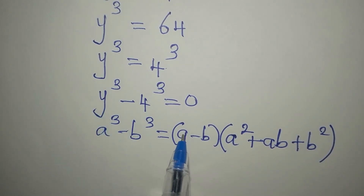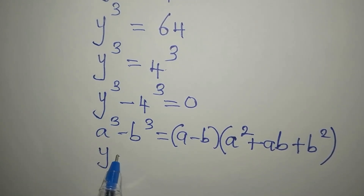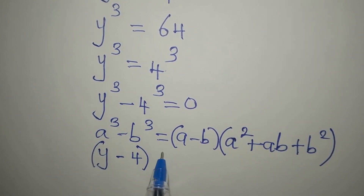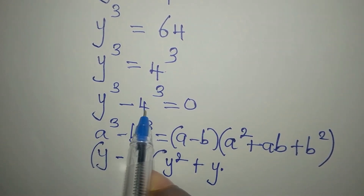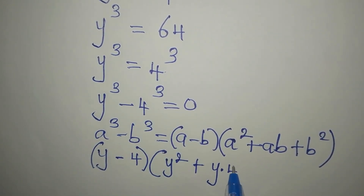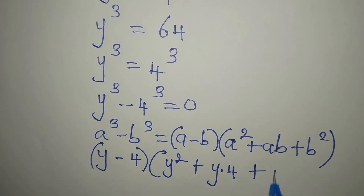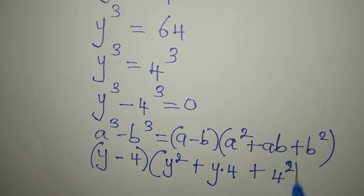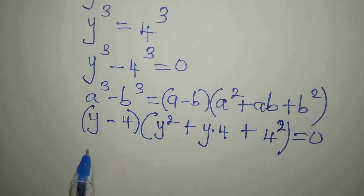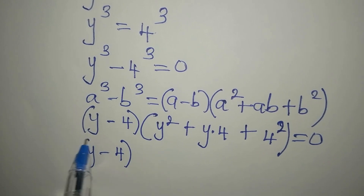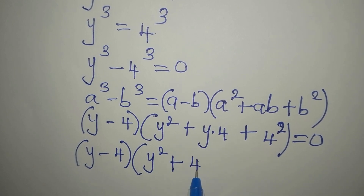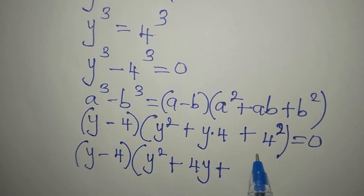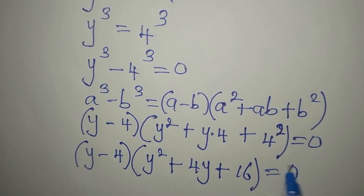Our a is y, so in place of a minus b I'll write y minus 4. In place of a squared I'm going to write y squared, then plus a times b: a is y and b is 4, so write 4 here, then plus b squared which is 4 squared. So we have y minus 4, and from the second factor we have y squared plus 4y plus 16, and then everything equals zero.